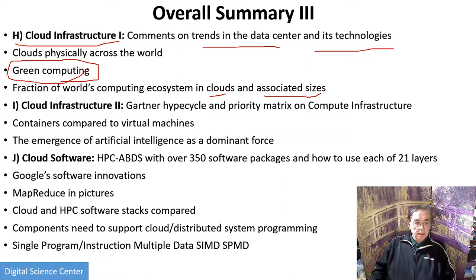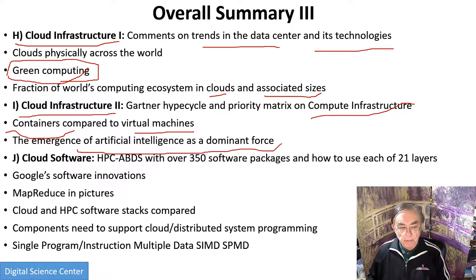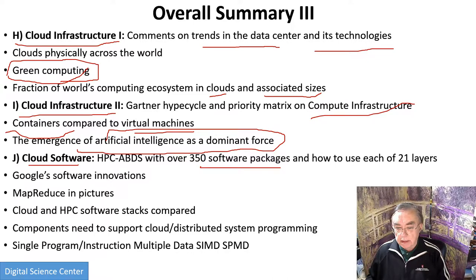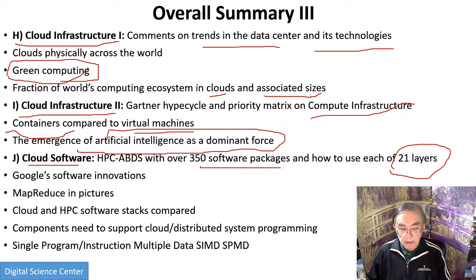Cloud Infrastructure 2 has the Gartner hype cycle priority matrix on compute infrastructure. It compares containers like Docker and Kubernetes with virtual machines, and it looks at the most important current trend: the emergence of AI as a dominant force. The last lesson on this page, J, is cloud software, covering the high performance computing enhanced Apache Big Data Stack — 350 software packages arranged in 21 groups or layers. We describe the role of each layer and highlight Google, which has made many innovations in this area because they are often tackling the largest problems first.